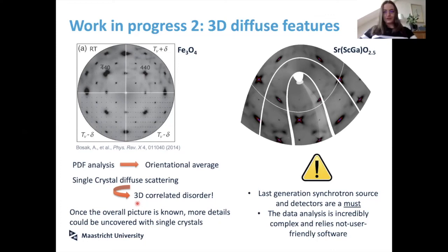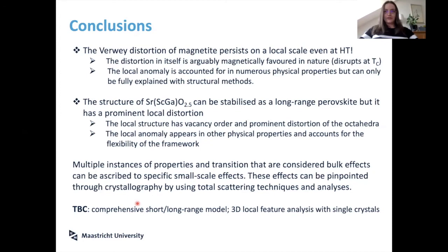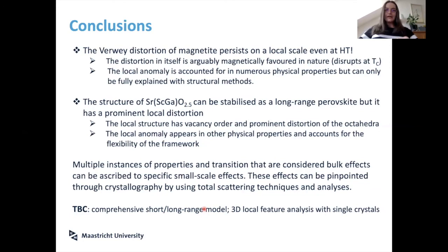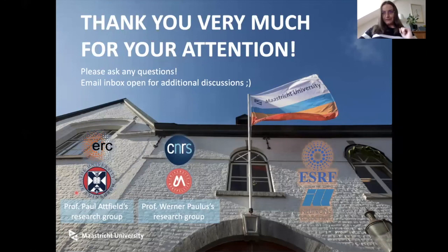Those are our conclusions. I hope I convinced you that bulk properties are influenced by the local structure of your sample — it's worth looking at any deviation in your physical properties from a crystallographic point of view. To be continued: the comprehensive short-range/long-range model and 3D local features. Thank you for your attention, and thanks to the people who enabled me with support and expertise, and to the central facilities. I'm happy to take any questions.